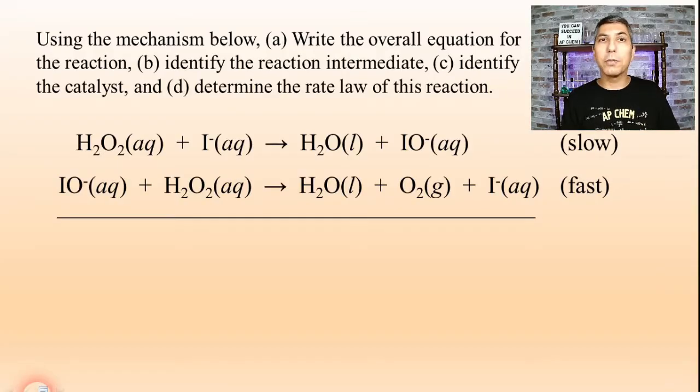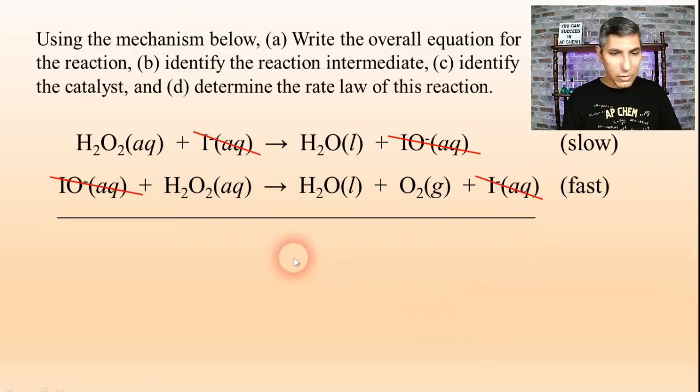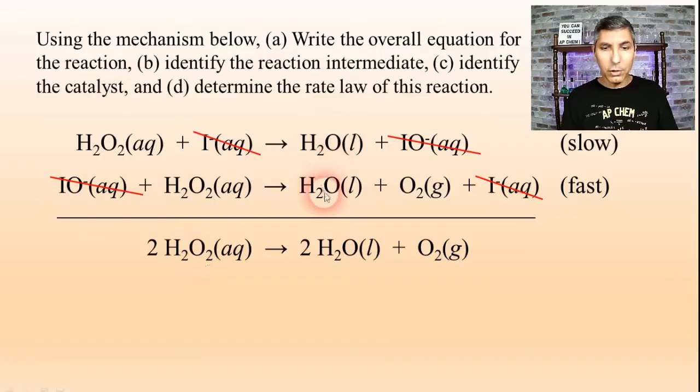So once again we're going to add these two elementary steps together and that's going to help us see what the overall equation is. There are a few things we can cancel as we're adding these together. You can see that we can cancel out the IO⁻, so that can be canceled. I also see that this I⁻ on both sides can be canceled as well. So once I've canceled those out, now I'm ready to add the two elementary steps together and get the overall equation. So I have two molecules of hydrogen peroxide, H₂O₂, and then I have two molecules of water and one molecule of oxygen gas. And so that's part A, the overall balanced equation.